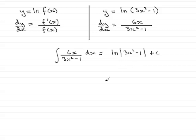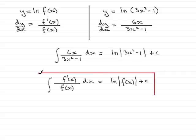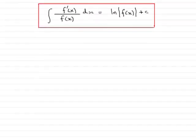In general, what I'm saying is that if we have a fractional integral where the denominator is our function f(x), and we notice that the numerator is the differential of the denominator, then it must have come from differentiating the natural log of that function of x. Always put it in a mod sign. This is a very important result and one that we're going to work with in the next few examples.